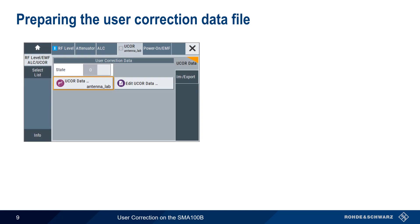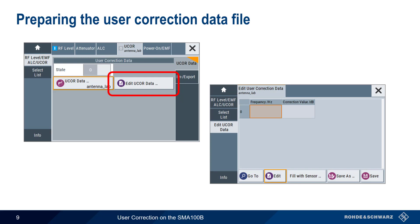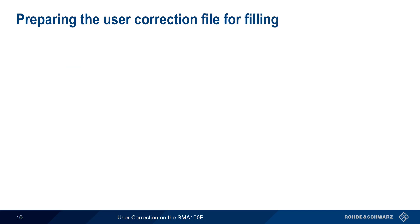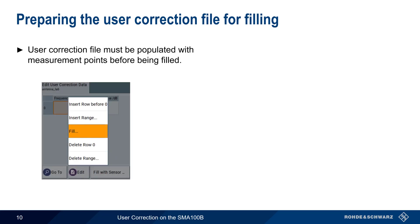After we've selected the newly created empty file, choose Edit U-Core Data. We'll be using a sensor to automatically fill in this data file, but first we need to edit the file. The reason we have to edit this file is that we need to specify the frequency steps or the measurement points for the user correction. The easiest way to do this is using the Fill function.